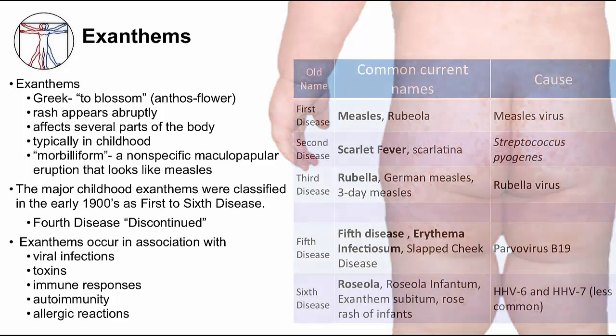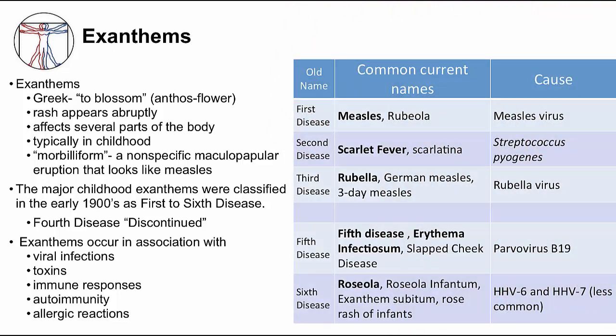The major childhood exanthems were classified in the early 1900s as first disease, second disease, etc., up to sixth disease, as shown in the table. Measles was first disease, and the other exanthems were distinguished as separate diseases. Over time, fourth disease was dropped — there have been theories it was a combination of some of the others. At the time, the causative agent was not known for any of these diseases, but we now know the etiologies. Names for these exanthems can be quite confusing, as different physicians use different terms; the more common names are listed in the table.